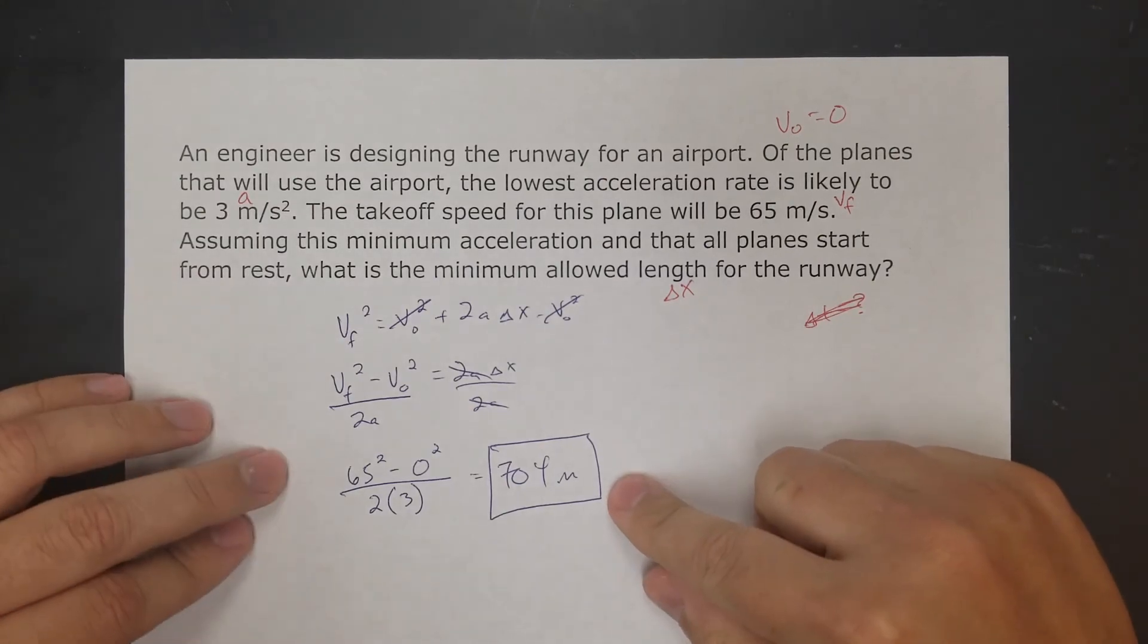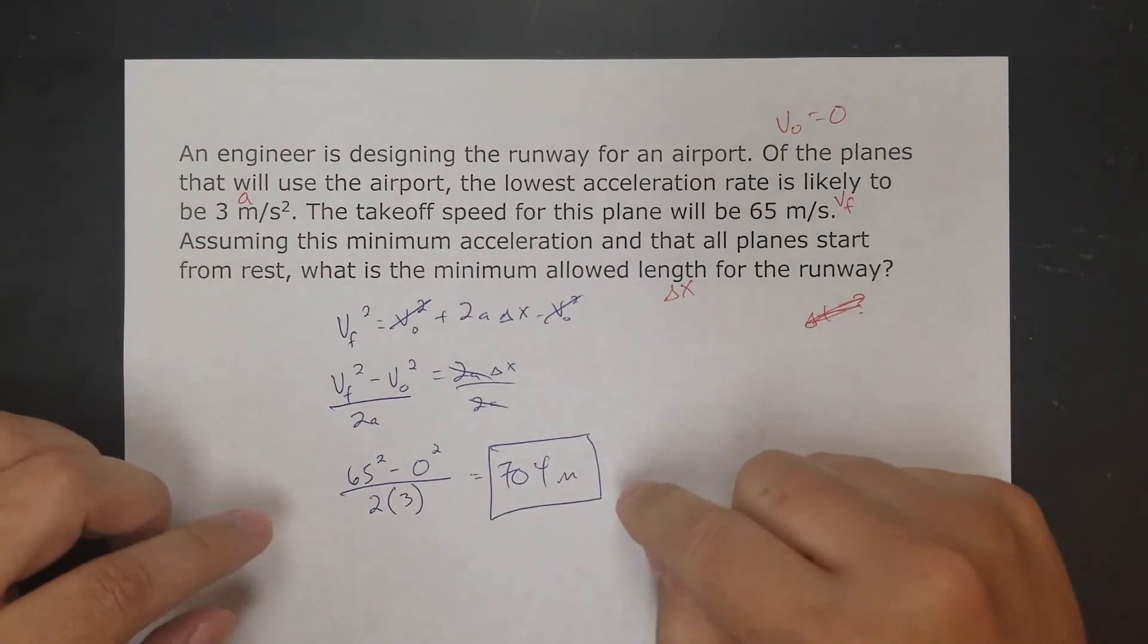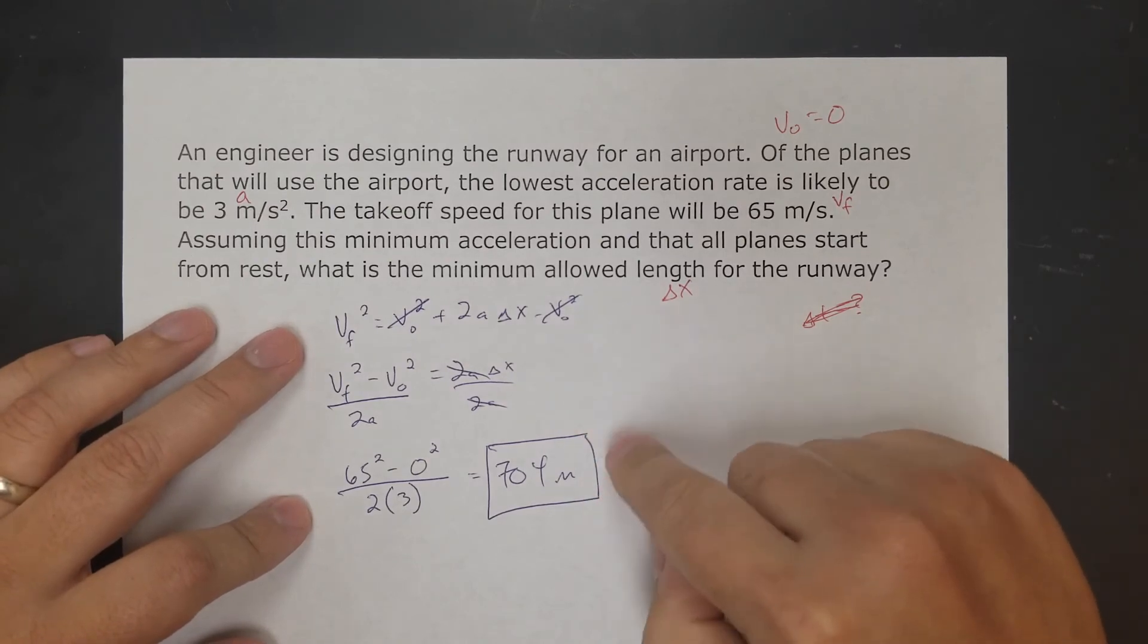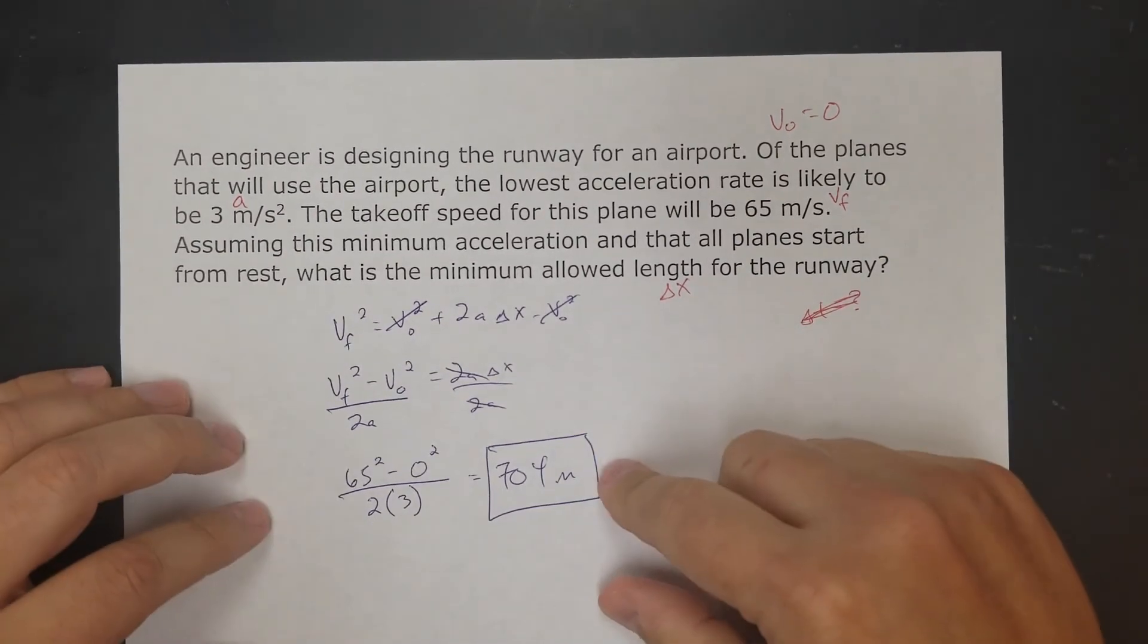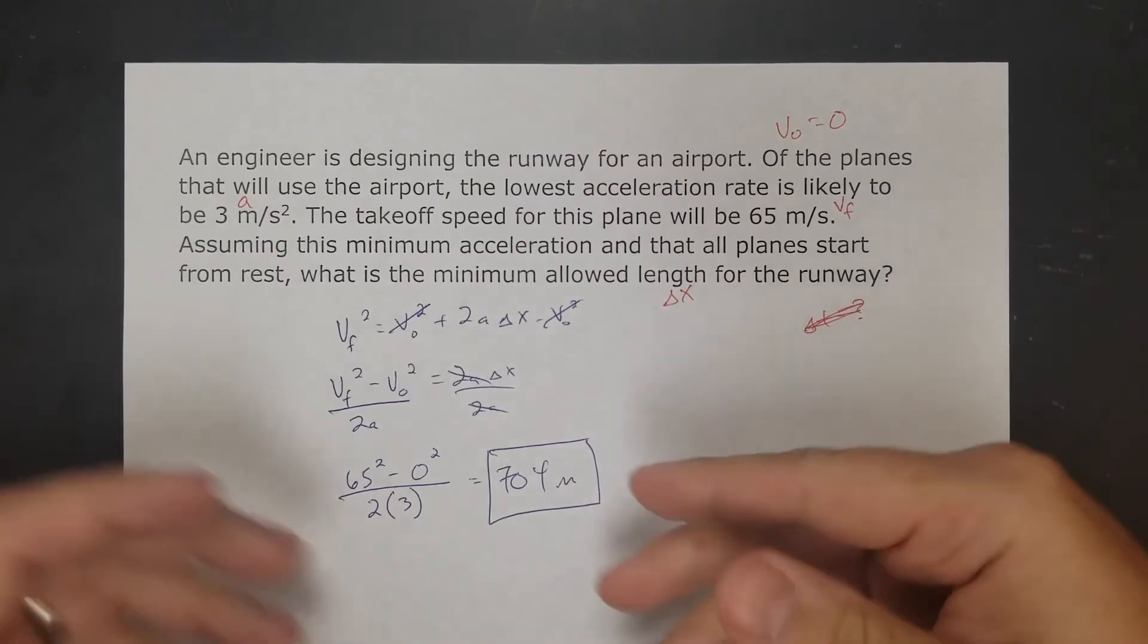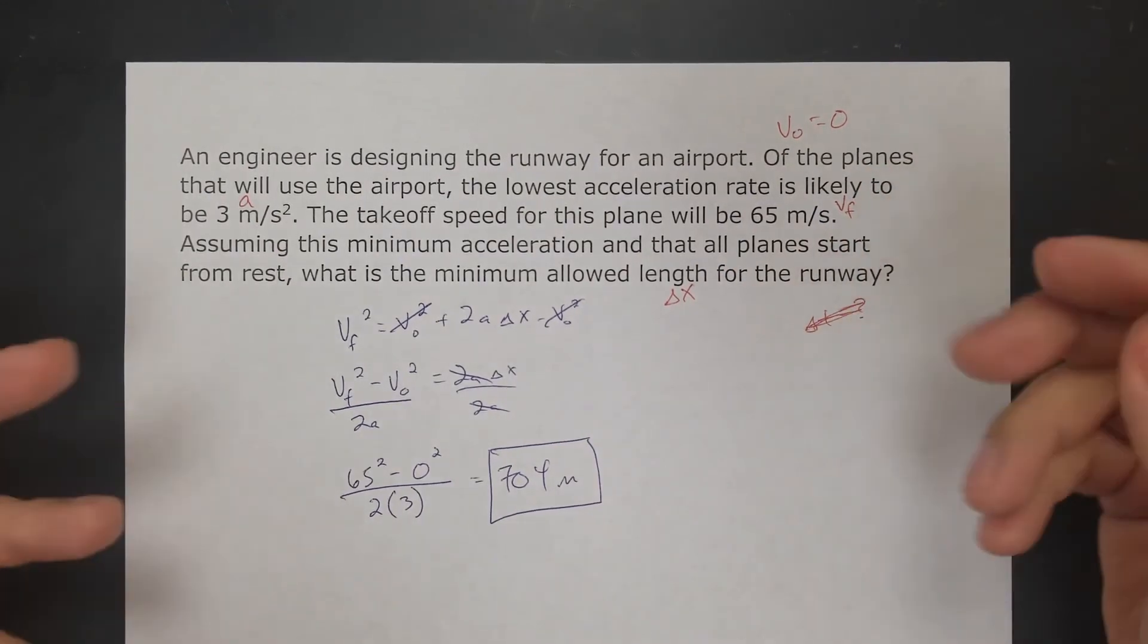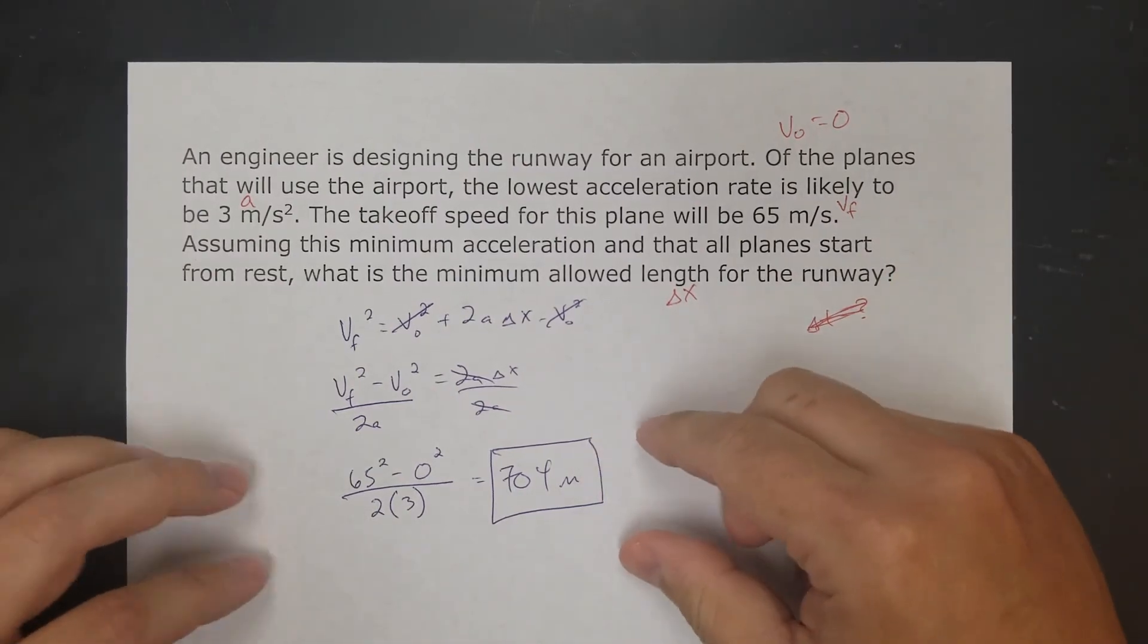I get 704 meters. Does this make sense? 700 meters for a runway taking off, yes, that's a reasonable number. If I would have gotten a negative number or some humongous number bigger than the mile that I had last time, then yes, it'd be wrong. But this is a number that makes sense to me.